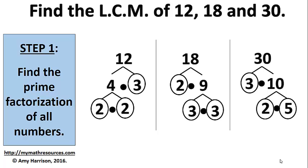Next, let's find the least common multiple of 12, 18, and 30. As you can see, the first step is the same. We find the prime factorization of all the numbers.